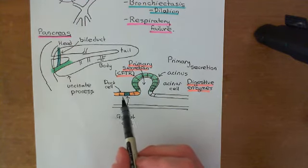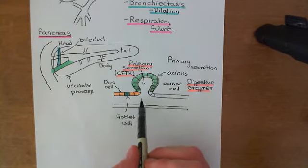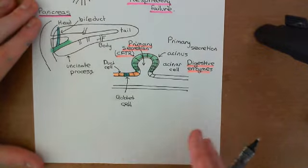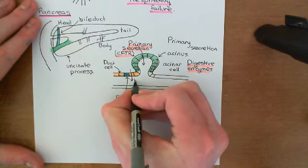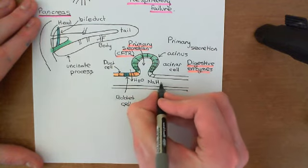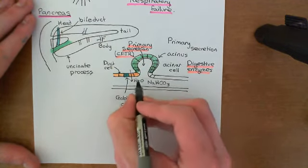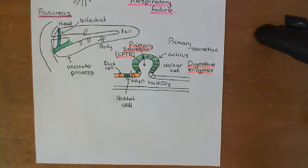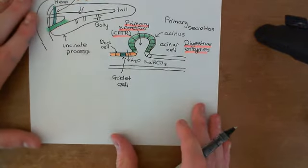The goblet cells are going to be adding mucin into this secretion. The duct cells are going to be adding more fluid into the secretion and also making the solution alkaline. This addition of fluid by the duct cells — putting in water along with more solute — specifically they're going to be adding sodium bicarbonate. The addition of this fluid with sodium bicarbonate solute is going to be CFTR-dependent, so this will also go wrong in cystic fibrosis.